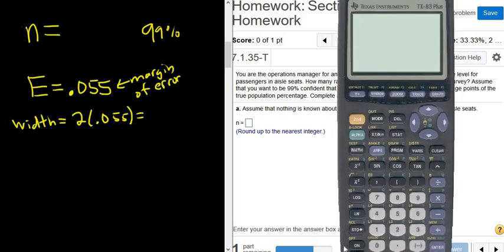I'm going to put it in the calculator. So it's 2 times 0.055. There it is, 0.11.